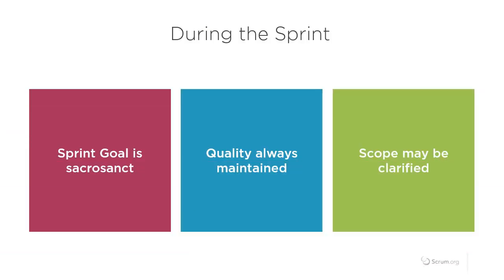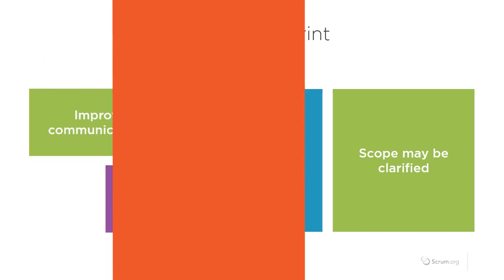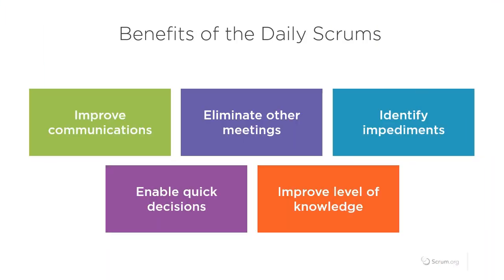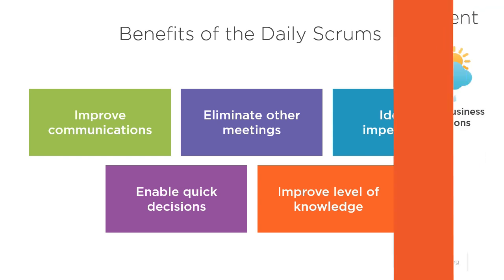Scrum is the world's most widely used Agile framework. According to the 2019 State of Agile report from Colabnet, more than half of all Agile implementations worldwide use Scrum.